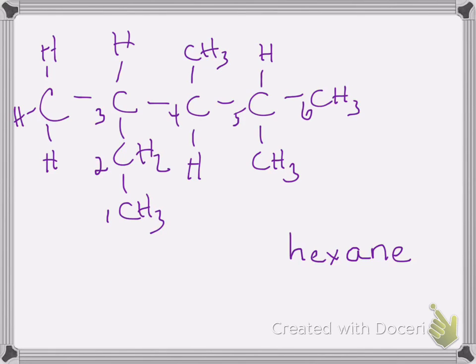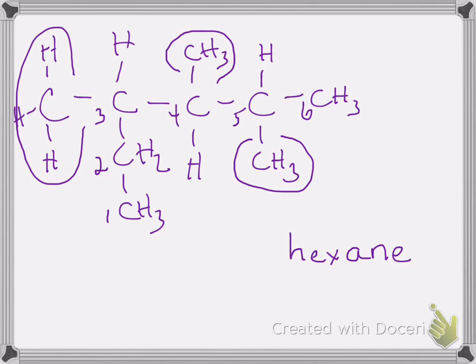The final thing I need to do is name the substituents. I'll circle them — I see one there, one up here, and one over here. So I have three substituents and all three of them are methyl groups, so I know we're going to have a trimethyl molecule here.